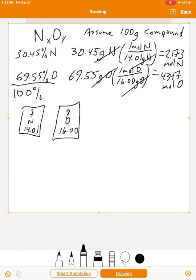If you take a look at those two numbers, they're not whole numbers. We want to make them whole numbers. When we do empirical formulas, x and y need to be whole numbers. So here's what we're going to do. To make them whole numbers, we're going to note that the nitrogen is smaller.